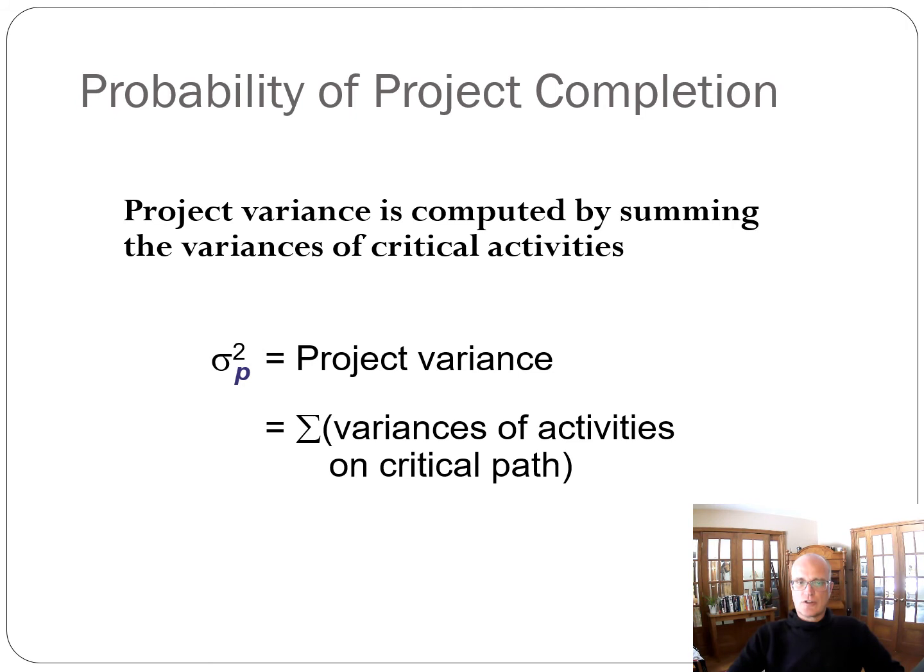And then determine the critical path. The project variance is computed by summing the variance of the critical activities. So summing the variances of the tasks or activities that are on the critical path. Again, this is relatively straightforward as long as you've drawn the project network effectively, you will be easily able to determine the project variance.